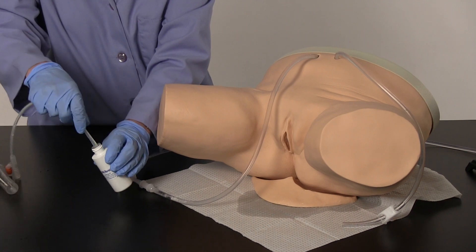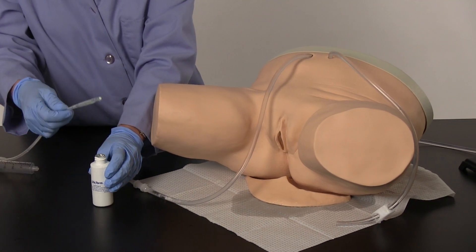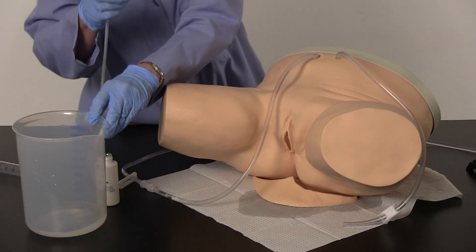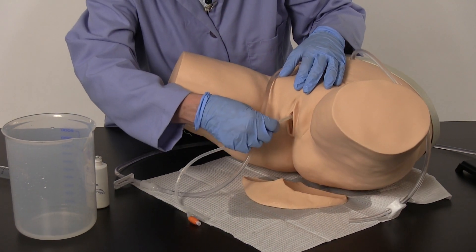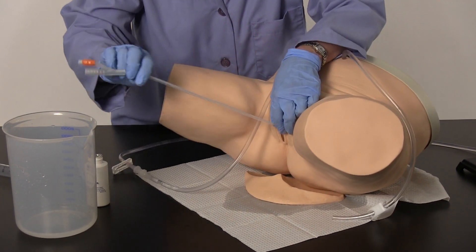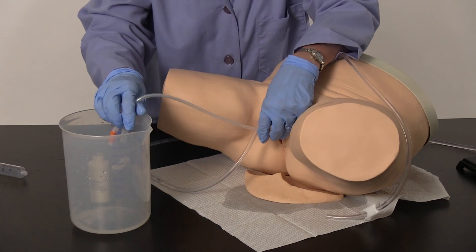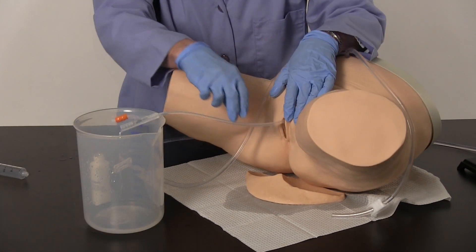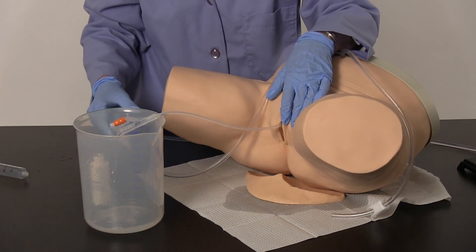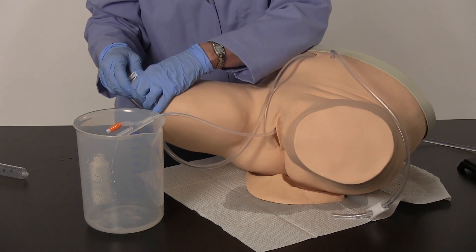A 20cc syringe will be needed for this procedure. The syringe shown is not supplied. Follow the procedures before performing a catheterization. To restrict the flow of water when inflating the cuff, slide the clamp closed on the fluid administration set.